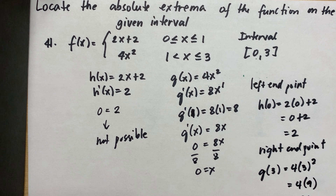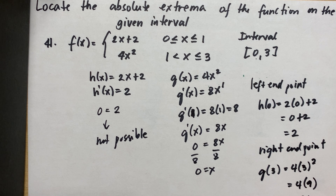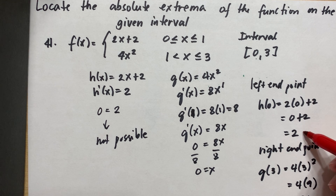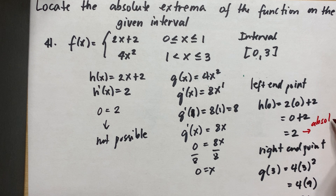So we can say that 36 is our absolute maximum, and 2 is the absolute minimum.